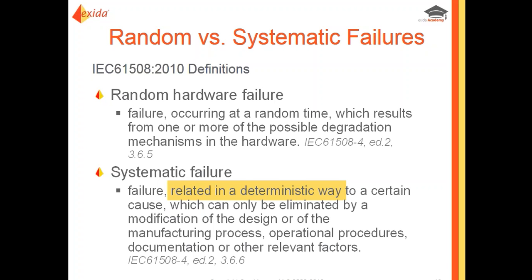IEC defines a random hardware failure as a failure occurring at a random time which results from one or more possible degradation mechanisms in the hardware. We can understand why not everybody knows what a random failure is from that definition — it is certainly not black and white, and there is a lot of room for interpretation and gray areas.